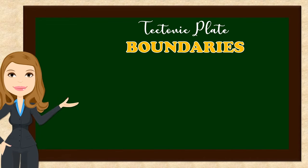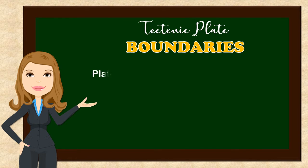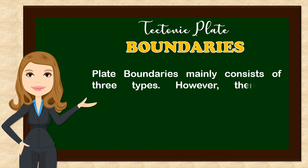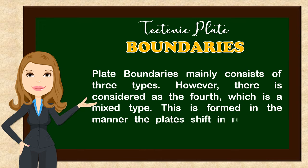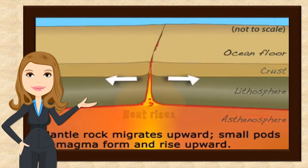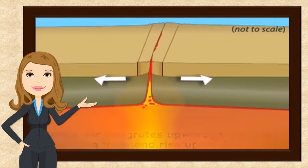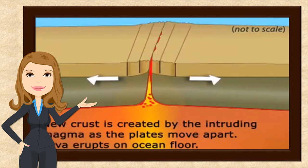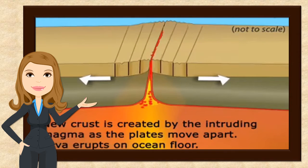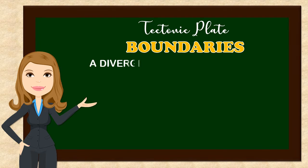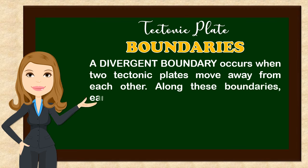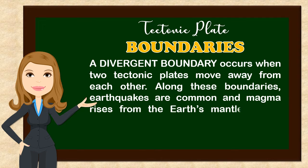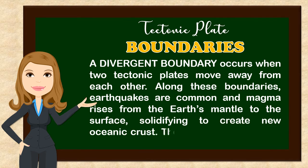And now let us discuss the tectonic plate boundaries. Plate boundaries mainly consist of three types; however, there is considered a fourth, which is a mixed type. This is formed in the manner the plates shift relative to each other. When heat rises, mantle rock migrates upward, and small pods of magma form and rise upward. This is an example of what is happening at a divergent boundary. A divergent boundary occurs when two tectonic plates move away from each other. Along these boundaries, earthquakes are common and magma rises from the Earth's mantle to the surface, solidifying to create new oceanic crust. The Mid-Atlantic Ridge is an example.